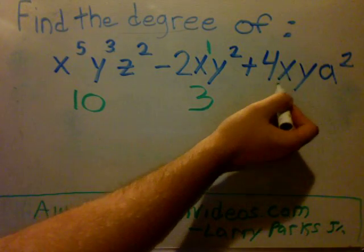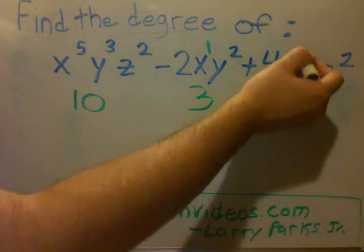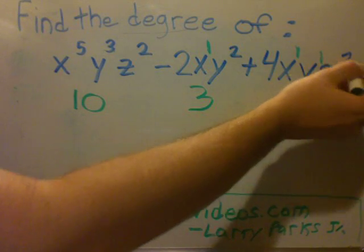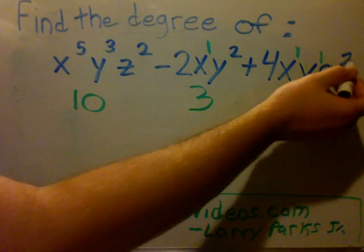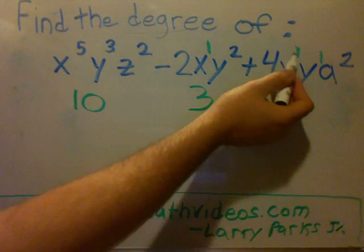Go to the next one. You have 1x, 1y, and 2a. So you have 2 plus 1 plus 1 is 4.